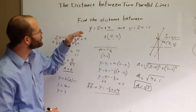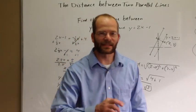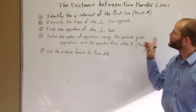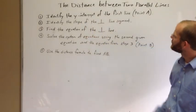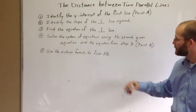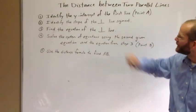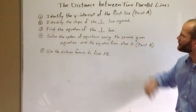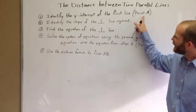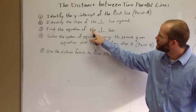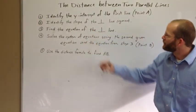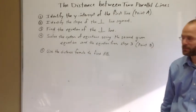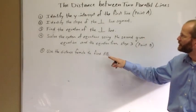It would not be a bad idea to reduce this process down into a discrete number of steps. Here are the five steps to find the distance between two parallel lines. One: identify the y-intercept of the first line — call it point A. Two: identify the slope of the perpendicular line segment — remember, opposite reciprocals. Three: find the equation of the perpendicular line using point A and that slope in point-slope form. Four: solve the system of equations using the second given equation and the equation from step three, labeling that solution point B. Five: use the distance formula to find the distance from A to B.